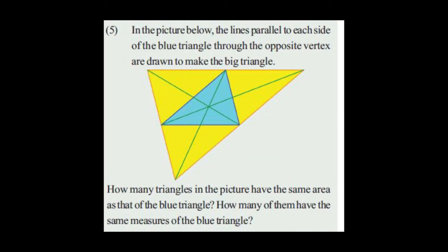Next question: In the picture below, lines parallel to each side of the blue triangle through the opposite vertex are drawn to make a big triangle. How many triangles in the picture have the same area as the blue triangle?